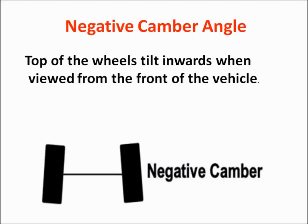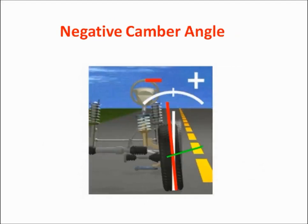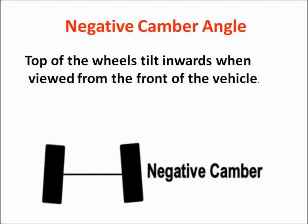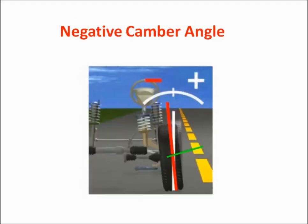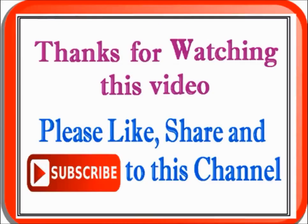Then we will understand negative camber angle. When the top of the wheels tilts inwards when viewed from the front of the vehicle, then the camber is negative camber angle. In this figure you can understand what is negative camber. The red line with the vertical white line shows the angle of negative camber angle. So in this way we have covered the topic camber or camber angle.